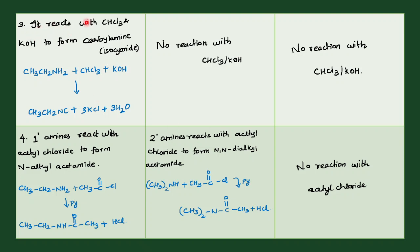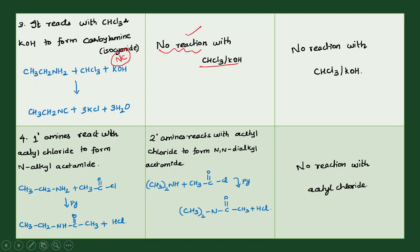Primary amine reacts with chloroform (CHCl3) and KOH to form carbylamine — that is isocyanate, with an N≡C group. This is the carbylamine reaction. Secondary and tertiary amines show no reaction with CHCl3 and KOH.